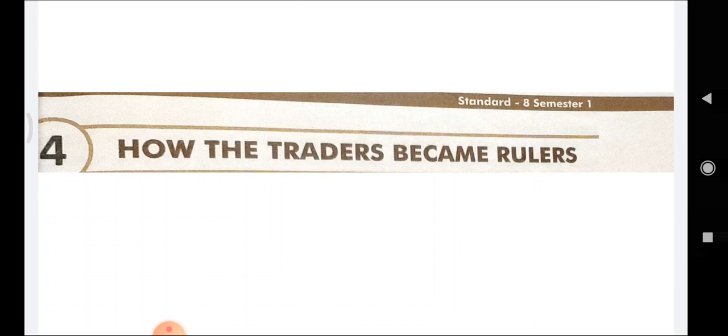Dear students, in this lecture we saw how the policies of Britishers were implemented in various parts of India in order to become rulers. The Britishers adopted various policies such as policy of expansion, policy of annexation, etc. So let's see what was policy of expansion.